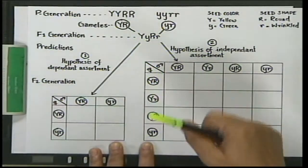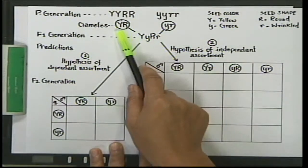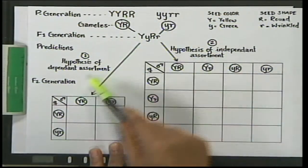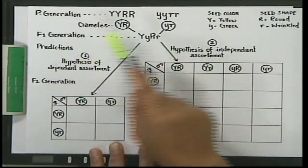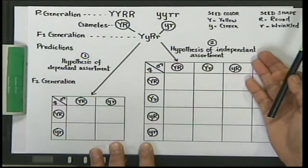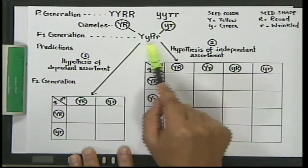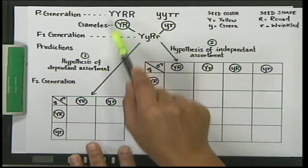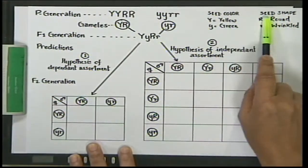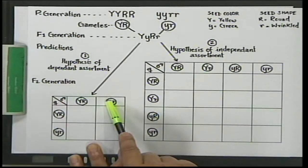There are two predictions. One hypothesis is that the characters are dependent — they go together and do not segregate but come together over generations. The other hypothesis is that seed color inheritance has nothing to do with seed shape inheritance — they are transmitted independently. If the first hypothesis is true, the F1 heterozygote would only ever produce gametes YR and yr, just as the original parents did.